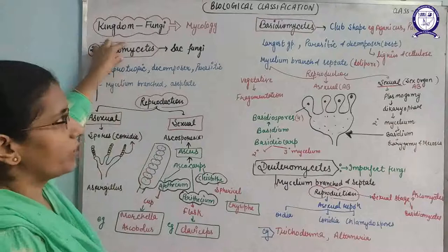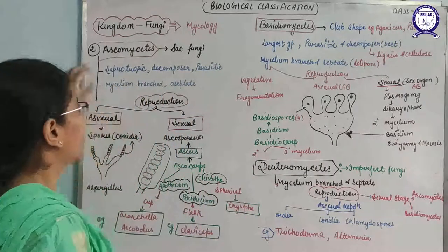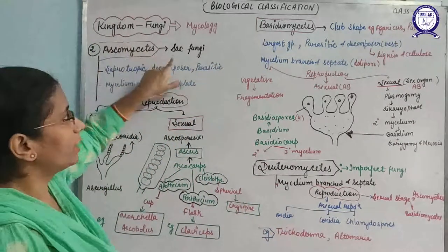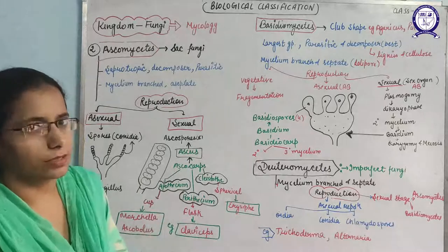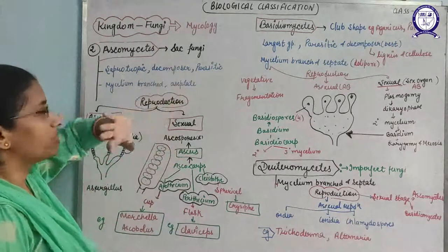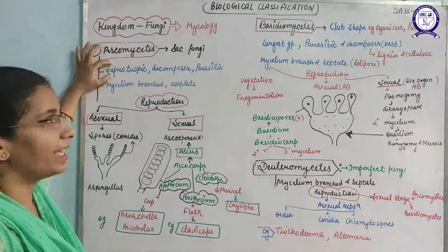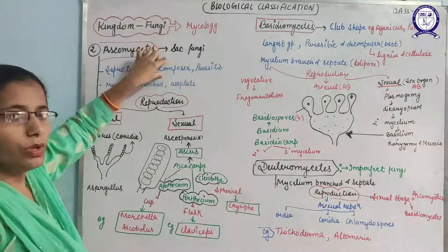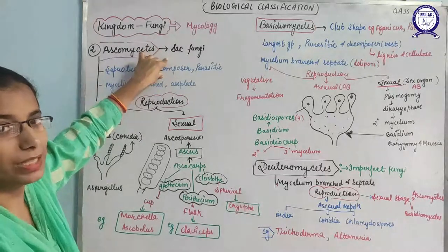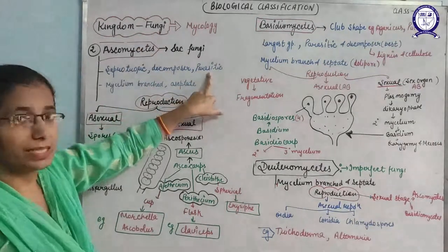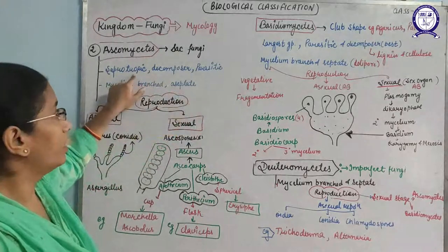Ascomycetes are also known as sac fungi because the fruiting body formed is a sac-like structure. Their main characteristics: they are saprotrophic in nature — they take food from dead and decaying matter — and act as decomposers, decomposing complex organic substances into simple organic substances and converting them into manure. They also act as parasites, taking nutrition from living hosts.